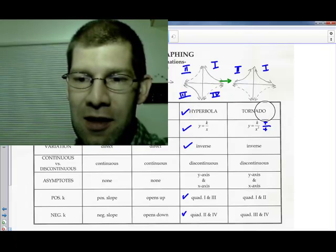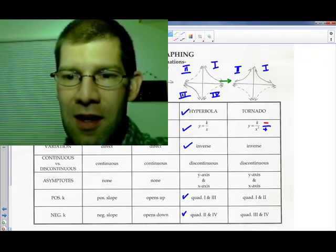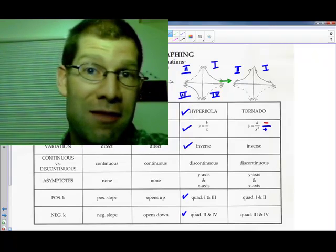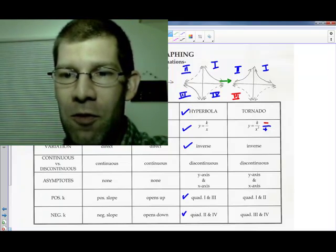If we change it, then, get rid of my positive here, and make that into a negative instead. A negative divided by x squared, which will always be positive, it's going to put you down here in quadrants 3 and 4.